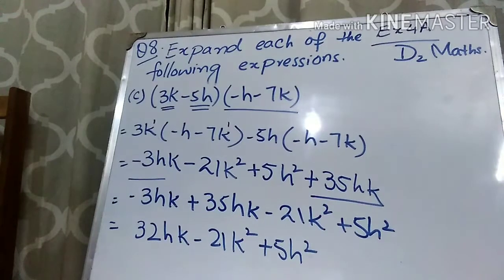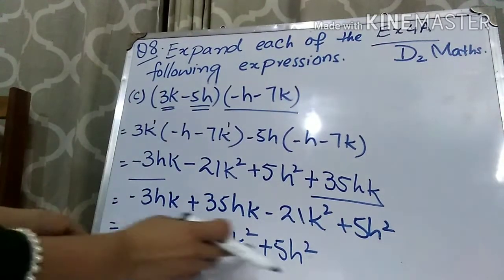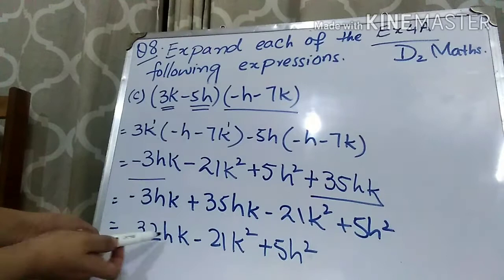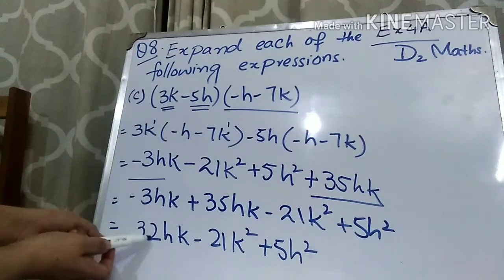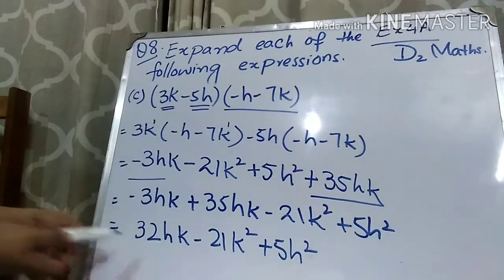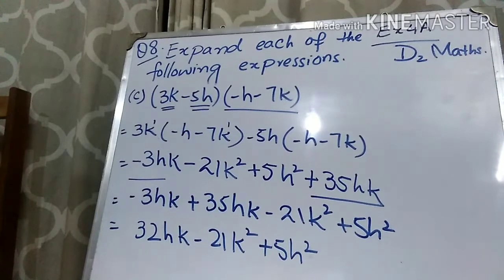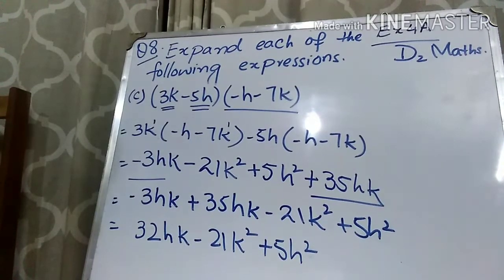Students, remember that you can write this as it is, or you can write it as 5h² - 21k² + 32hk. You can write it in both ways — both ways are right. I hope that part C is clear to you. Let's come to part D.